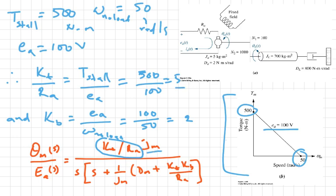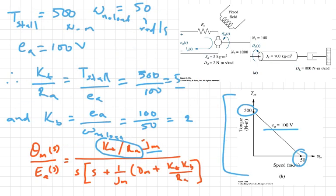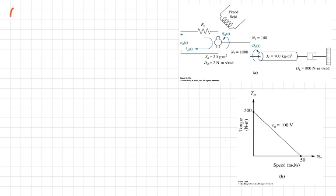Now we're going to substitute the values. We know K_T over R_A to be 5. We know our J_M to be 12, and we have our D_M which we calculated to be 10. So we can substitute these values and we will have θ_M over E_A(s) to be 5 over 12 over S times (S plus 1 over 12 times (10 plus this will be 5 times 2)).